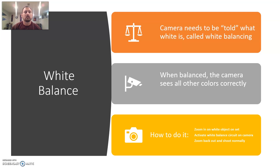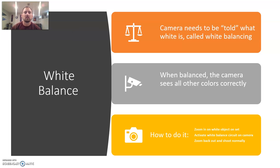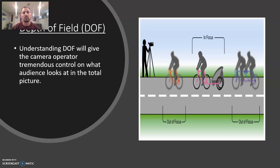White balancing: any time you're going to start filming something, you have to tell the camera what to look for. There's a setting on the camera where you focus on something that is white, and you tell the camera what white is. By doing that, it also knows all the other colors and it gives the image more clarity.